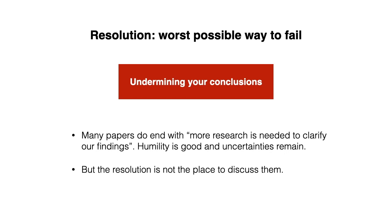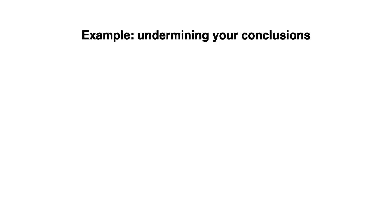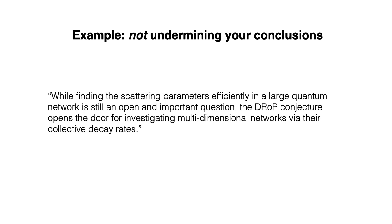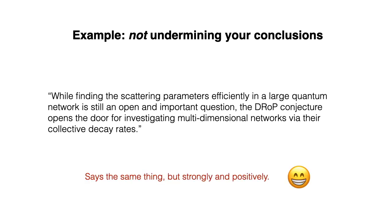And then there is the worst possible way to fail: to undermine your conclusions. Many papers end with 'more research is needed to clarify our findings.' Humility is good, and uncertainties remain, but the resolution is not the place to discuss them. For example, undermining: 'The drop conjecture opens the door for investigating multidimensional networks via their collective decay rates. However, finding the scattering parameters efficiently in the large quantum network is still an open and important question.' Here we say drop is great, and then say more needs to be done. A better version: 'While finding the scattering parameters efficiently in a large quantum network is still an open and important question, the drop conjecture opens the door for investigating multidimensional networks via their collective decay rates.' This says the same thing, but strongly and positively.